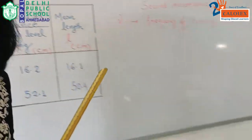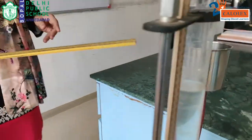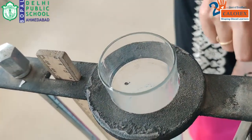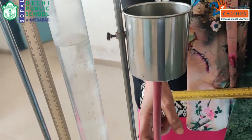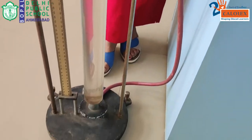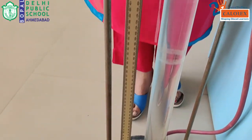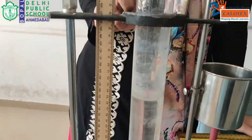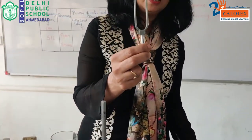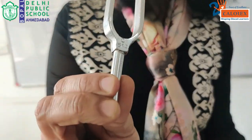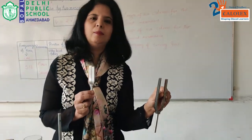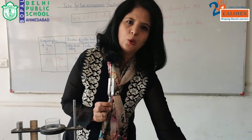Now I will show you the apparatus. Here we have the resonance tube — it has a glass tube and then there is a rubber tube, and both tubes are connected from the bottom side. Water is filled in this tube. We also have various tuning forks; for example, this one has a frequency of 512 Hz. We repeat this experiment using tuning forks of different frequencies.